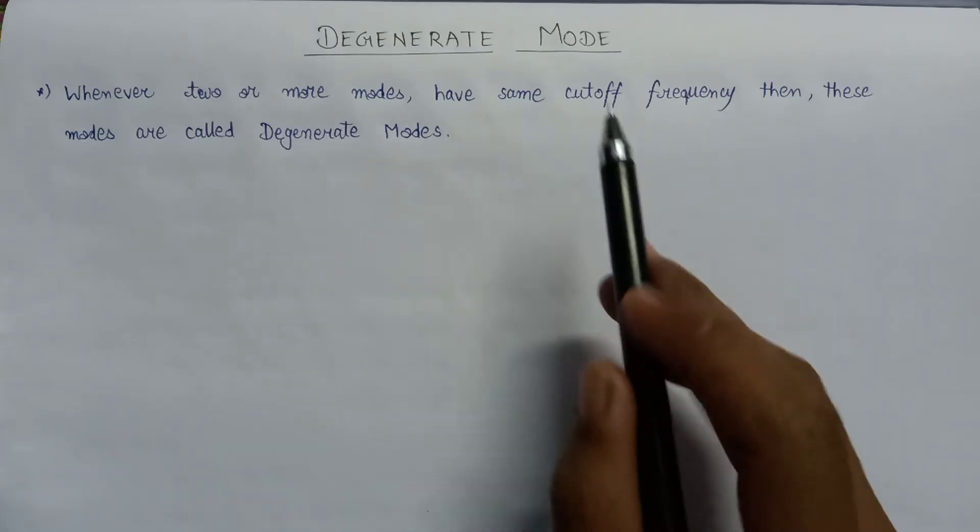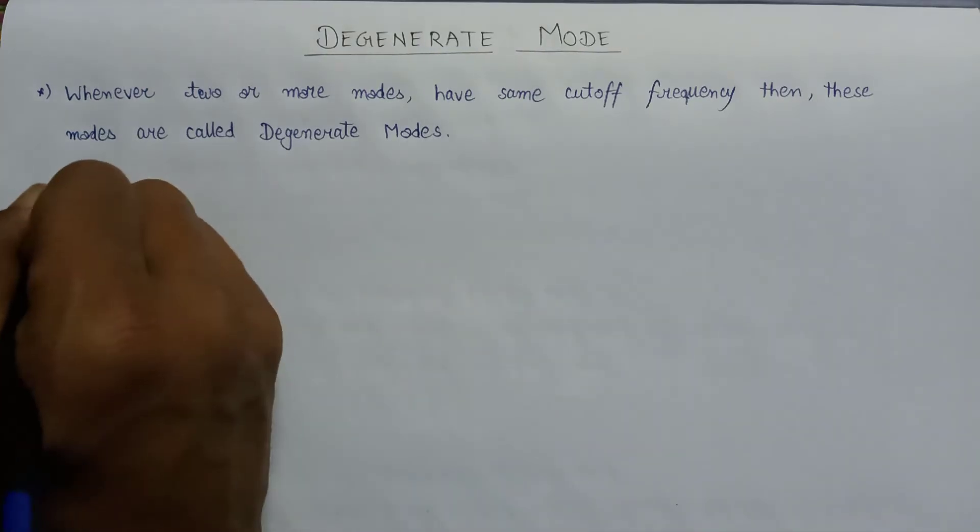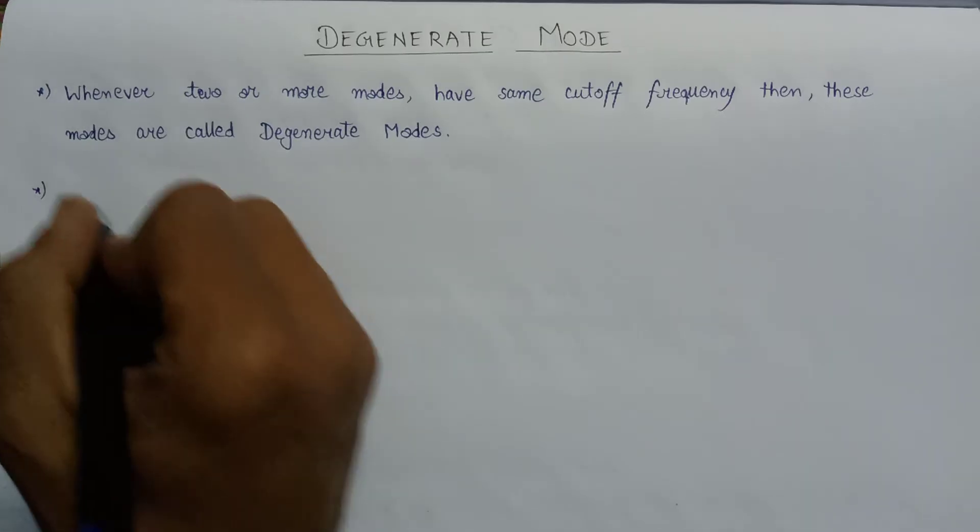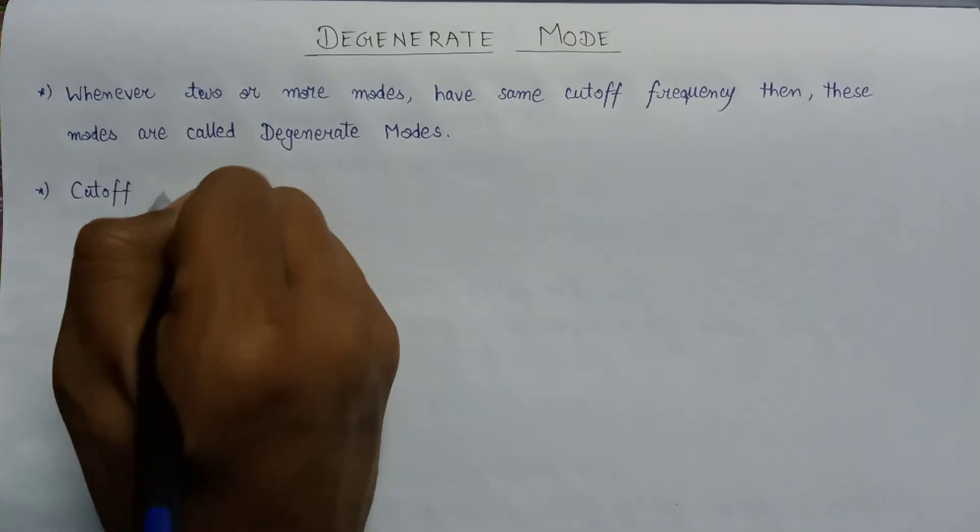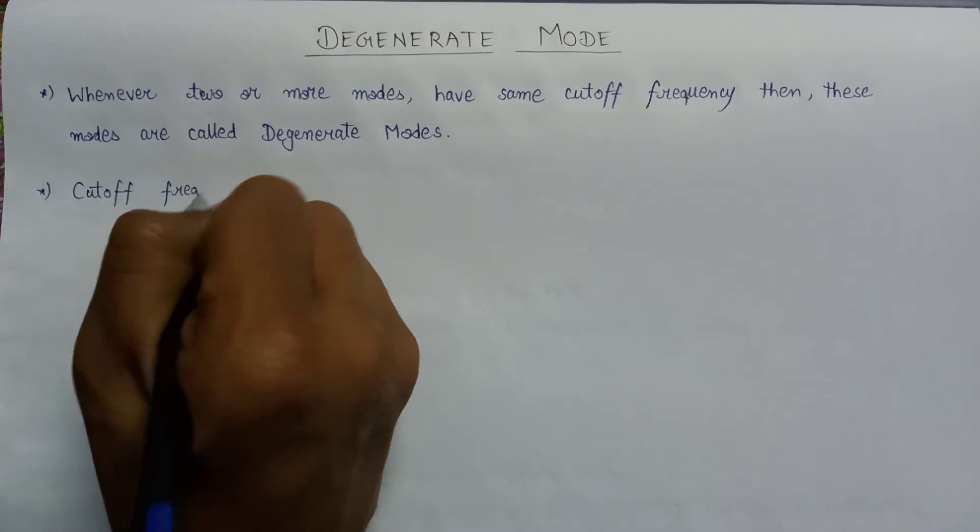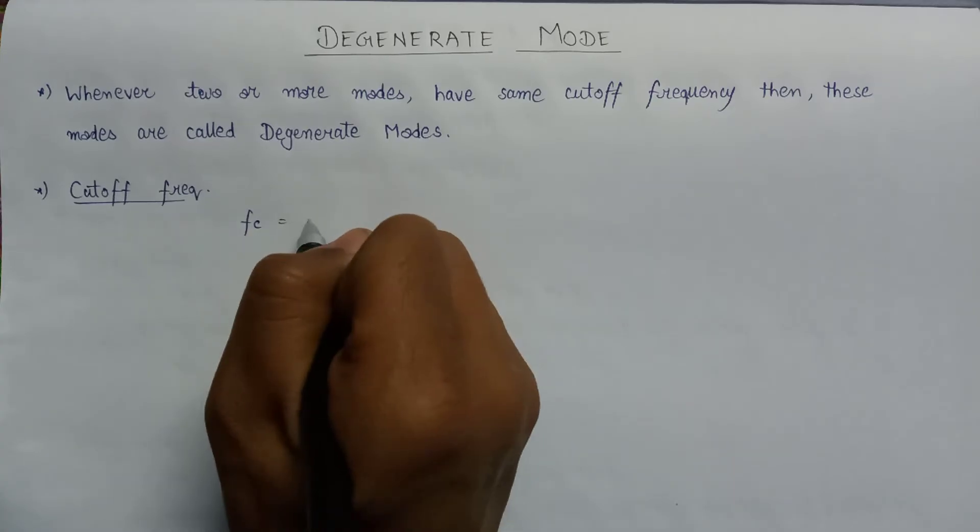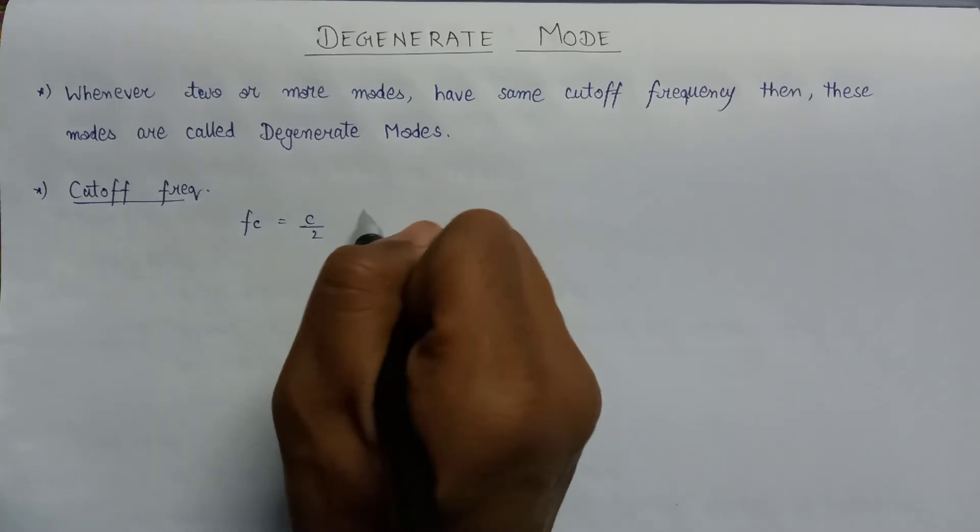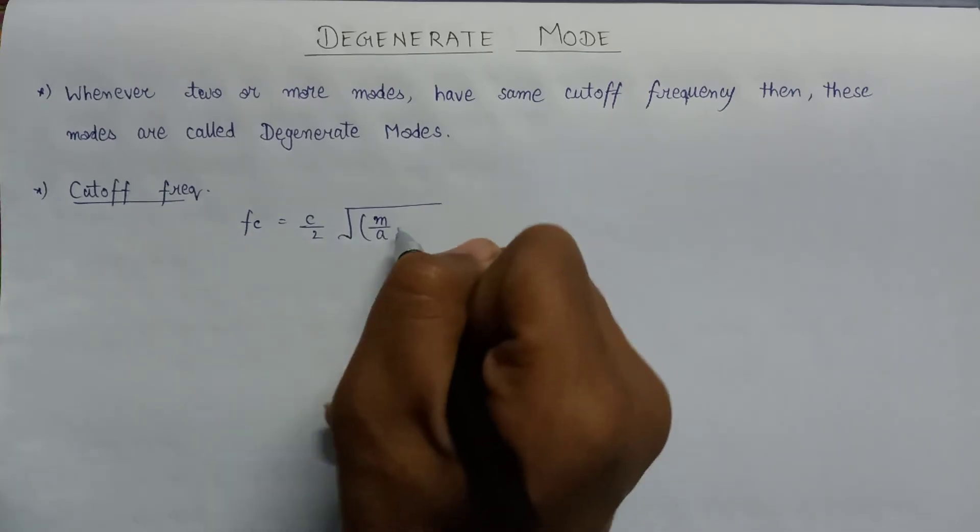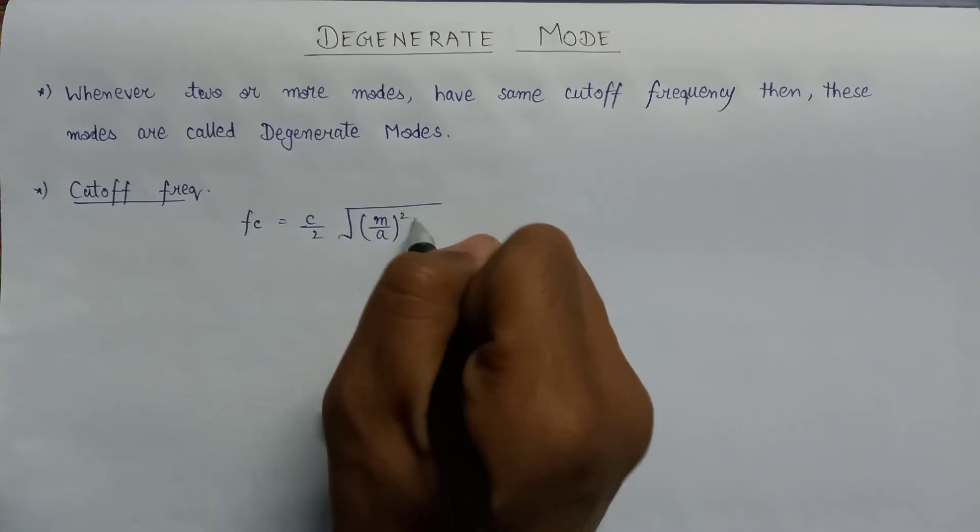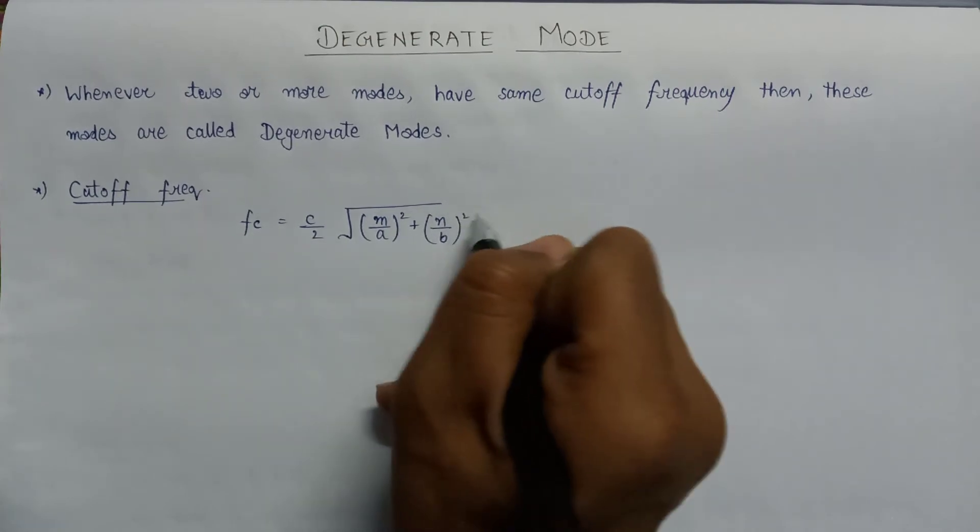Now let us have a look at the cutoff frequency of the waveguide. The general formula for the cutoff frequency of waveguide is given as fc equals c over 2 under the root m over a squared plus n over b squared.